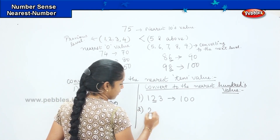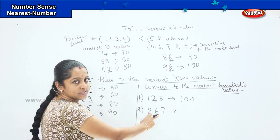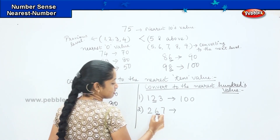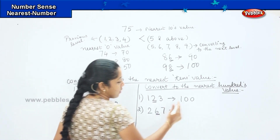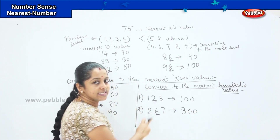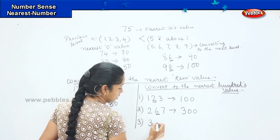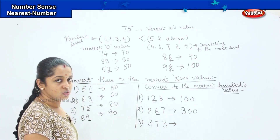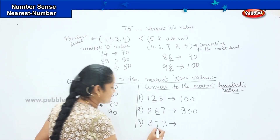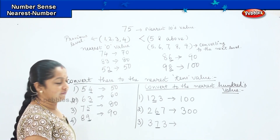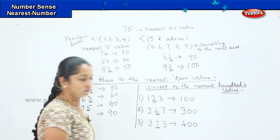The next question: I write 267. The hundreds digit is 2, and the tens digit is 6. Since 6 is greater than 5, I round up to the next level. So 267 will be rounded as 300. Next, 373 — the tens digit is 7, which is greater than 5, so we convert to the next hundreds. Therefore, 373 will be rounded off as 400.